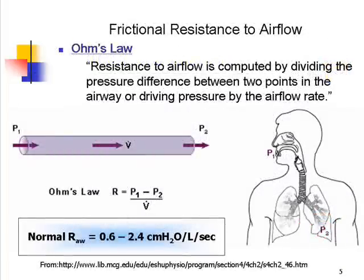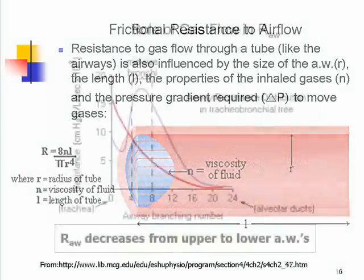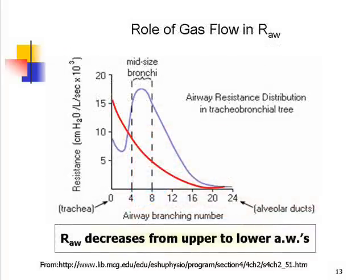Reviewing respiratory physiology, Ohm's Law is associated with the pressure gradient and flow required to move gas through the airway, with the combination of the two creating airway resistance. Of the total pulmonary frictional resistance, twenty percent is associated with tissue resistance while the remaining eighty percent is associated with airway resistance. Note how resistance decreases from the upper airway to the lower airway.